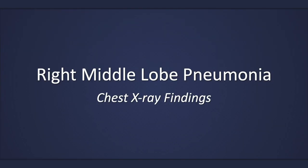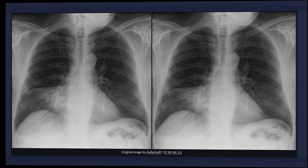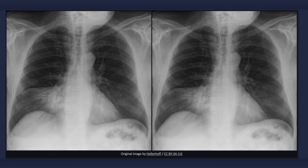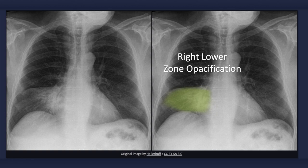This lecture will describe the classic chest x-ray findings associated with a right middle lobe pneumonia. When presented with an x-ray of a patient with right middle lobe pneumonia, the first finding you may notice is an area of consolidation. The presence of fluid density material within the right middle lobe results in a wedge-shaped opacity in the right lower zone adjacent to the heart.